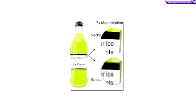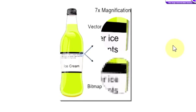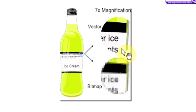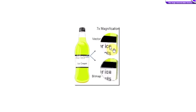If we go back to the lime green coloured bottle of ice cream, you can see the vector image, whilst being magnified seven times as well, the text is still crisp and you can read it.